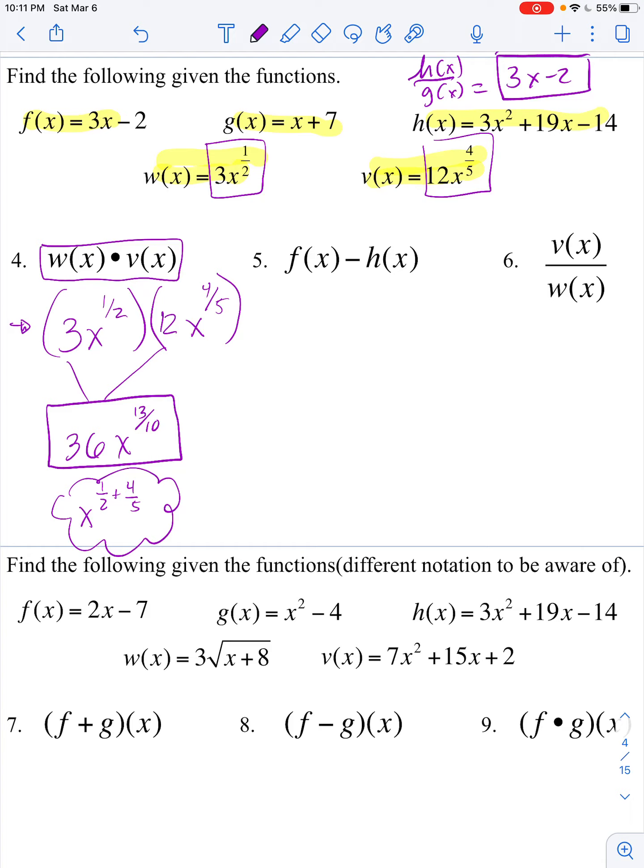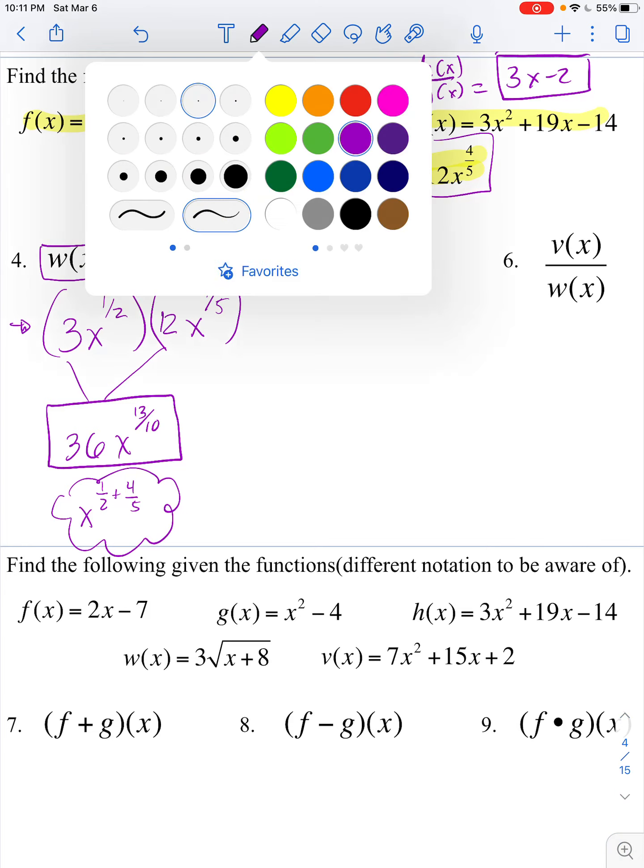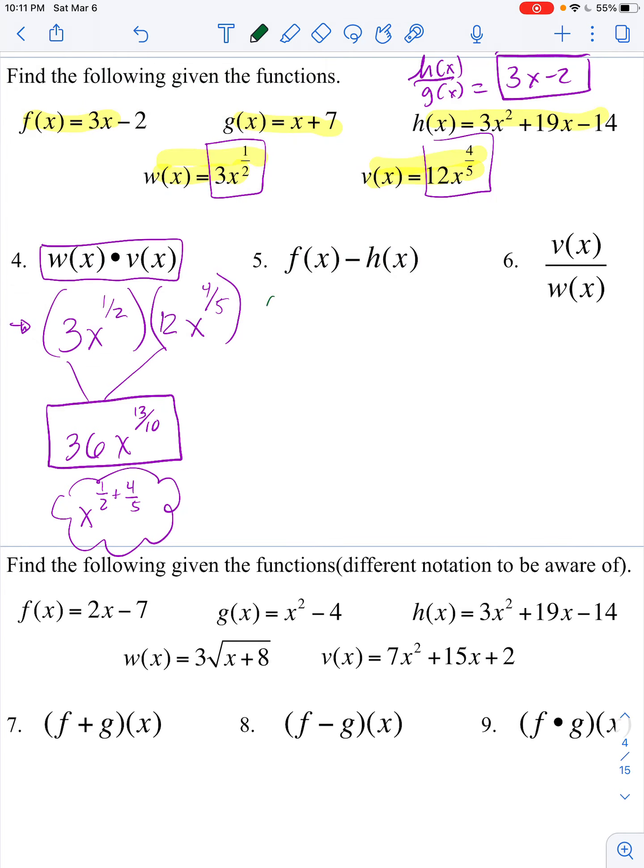Now we're back to a subtraction. So it's really important to use your parentheses. You know that f is 3x minus 2. And then your subtraction is going to impact all of h of x, which in this case is a lot: 3x squared plus 19x minus 14.